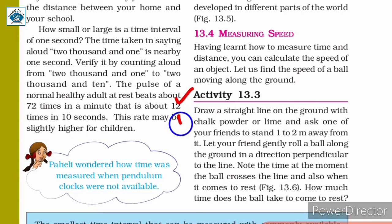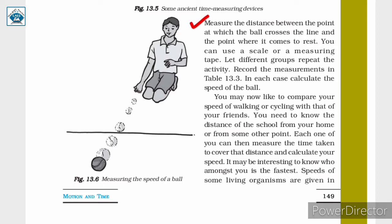Activity 13.3: Draw a straight line on the ground with chalk powder and ask one of your friends to stand 1 to 2 meters away from it. Let your friend gently roll a ball along the ground in a direction perpendicular to the line. Note the time at the moment the ball crosses the line and also when it comes to rest. Measure the distance between the point where the ball crosses the line and where it comes to rest, using a scale or measuring tape. Let different groups repeat the activity and record the measurements in table 13.3.